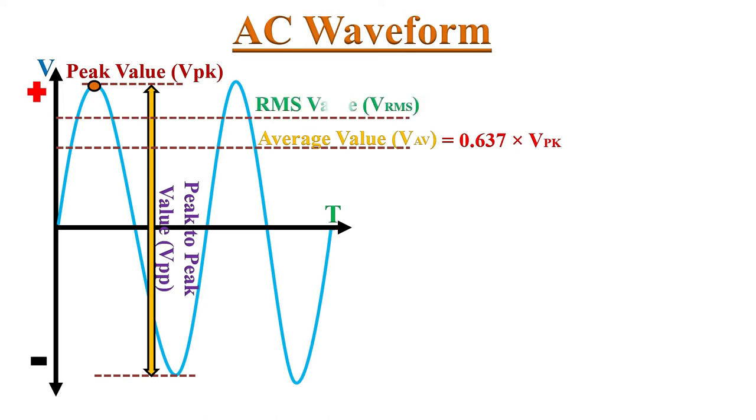The RMS value or root mean square value is the effective value of an alternating quantity. The RMS value of AC is equivalent to the value of DC when flowing through a circuit. RMS value equals to 0.707 into peak value. So, from these formulas, we can find peak value. Peak value equals to 1.414 into RMS value.